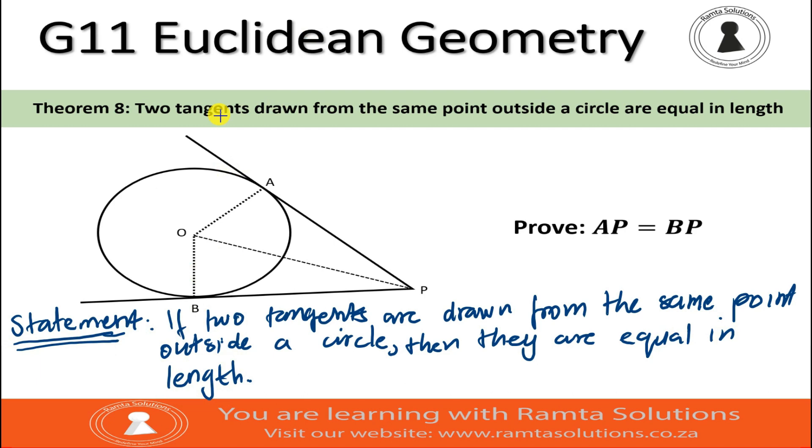The key words here that we are noting is the word tangent. Remember, a tangent is a line that touches the circle only once.